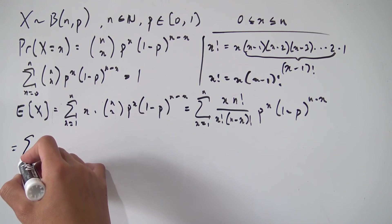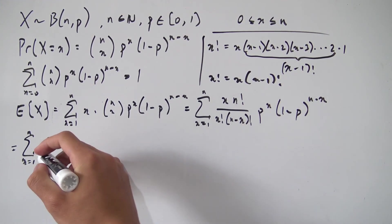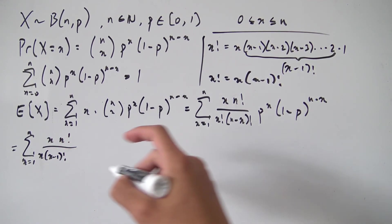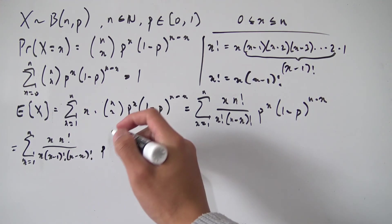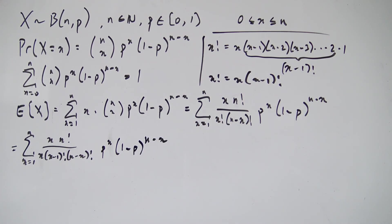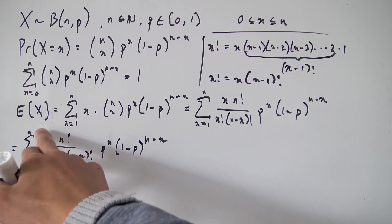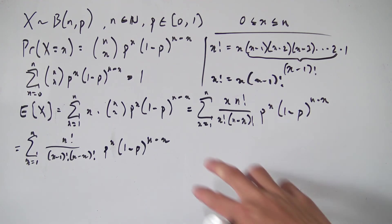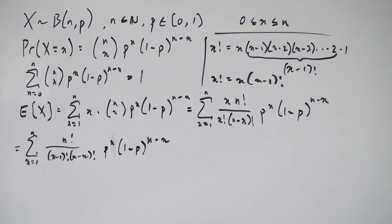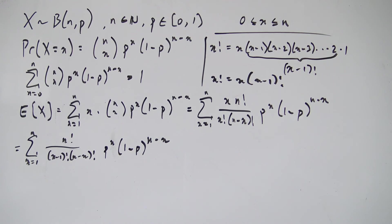Using that alternate expression, we now have the sum of X times N factorial over X times X minus 1 factorial, times N minus X factorial, times P to the X times 1 minus P to the N minus X. You can see why we did this — the X's now cancel nicely. So now we want to turn this expression back into the form of the binomial probability distribution, since we have this X minus 1 factorial which is a bit hard to deal with.